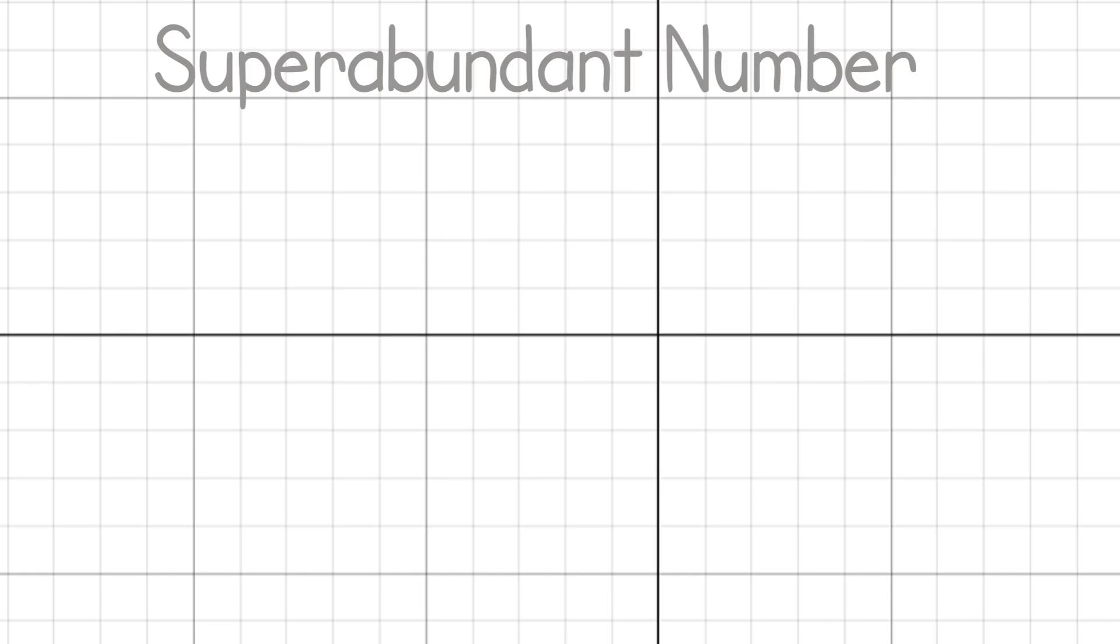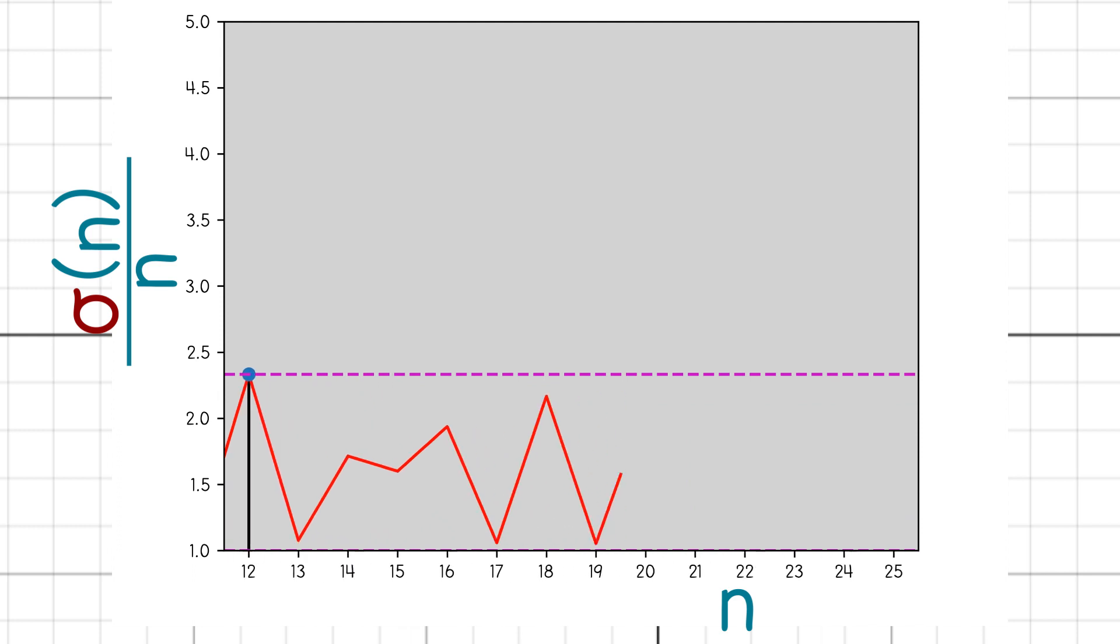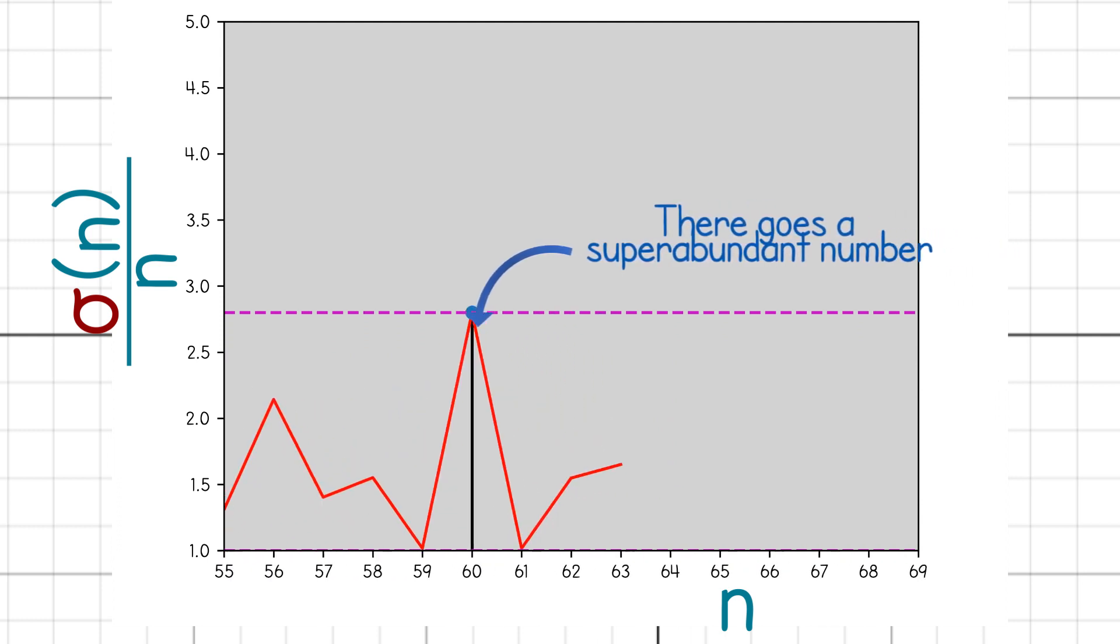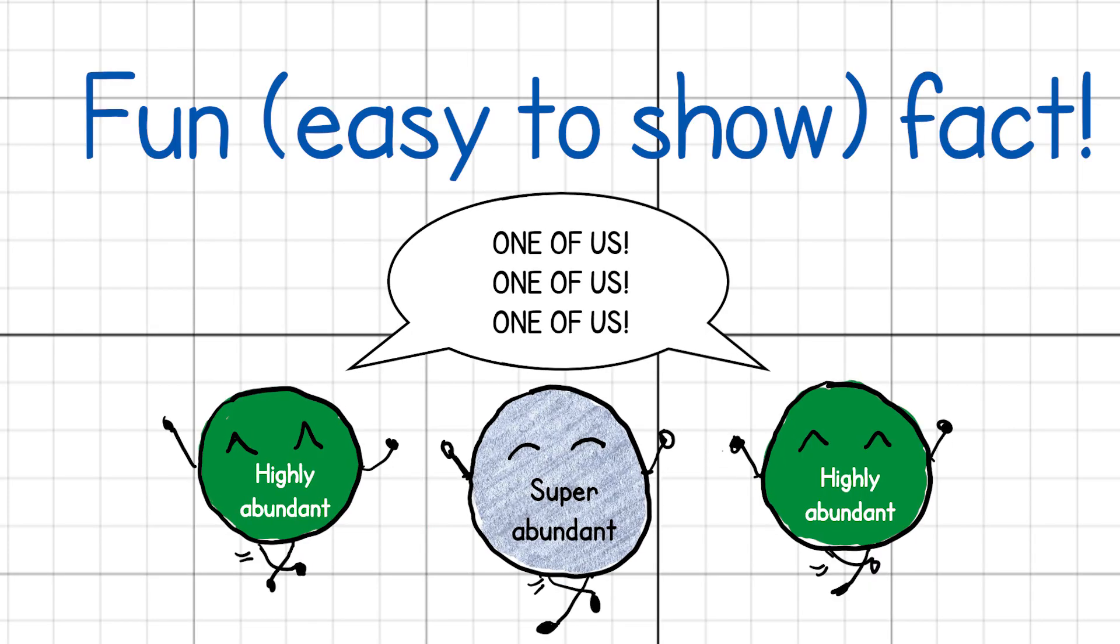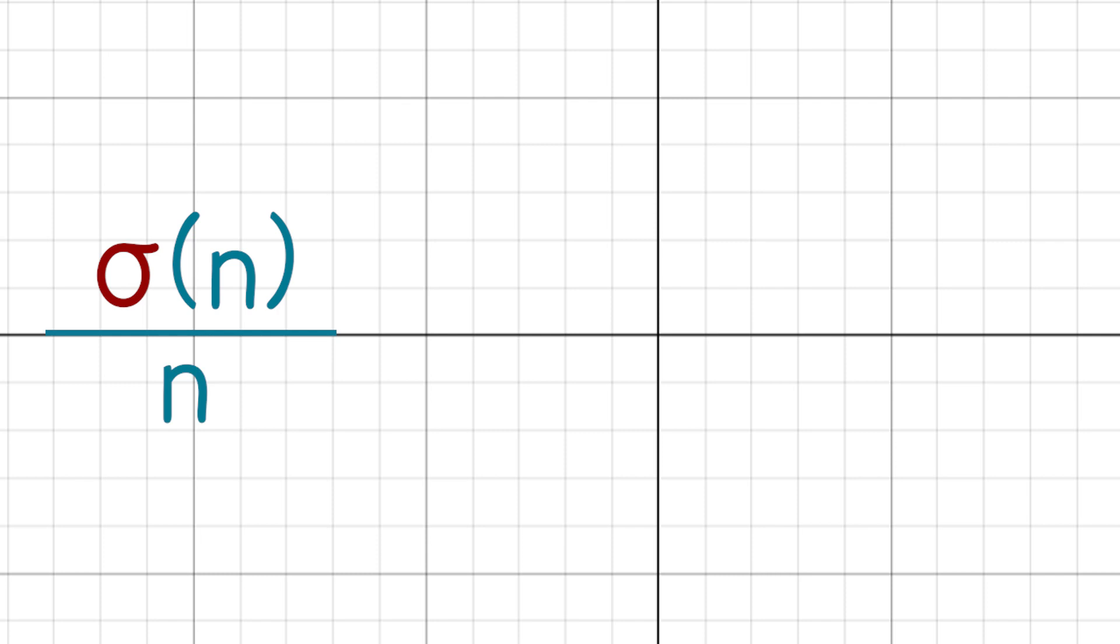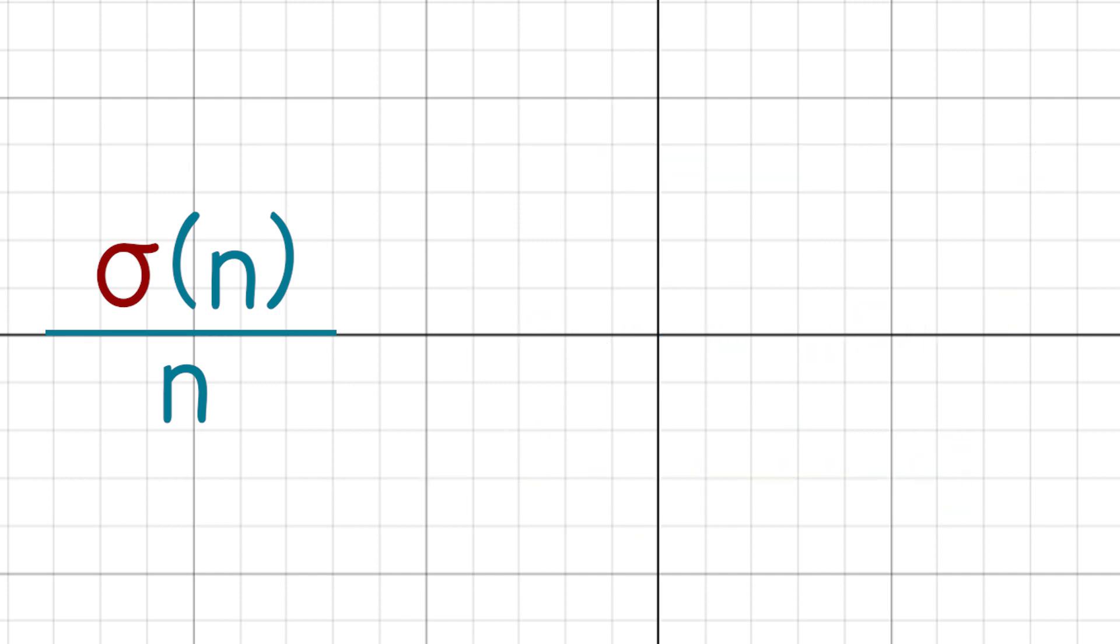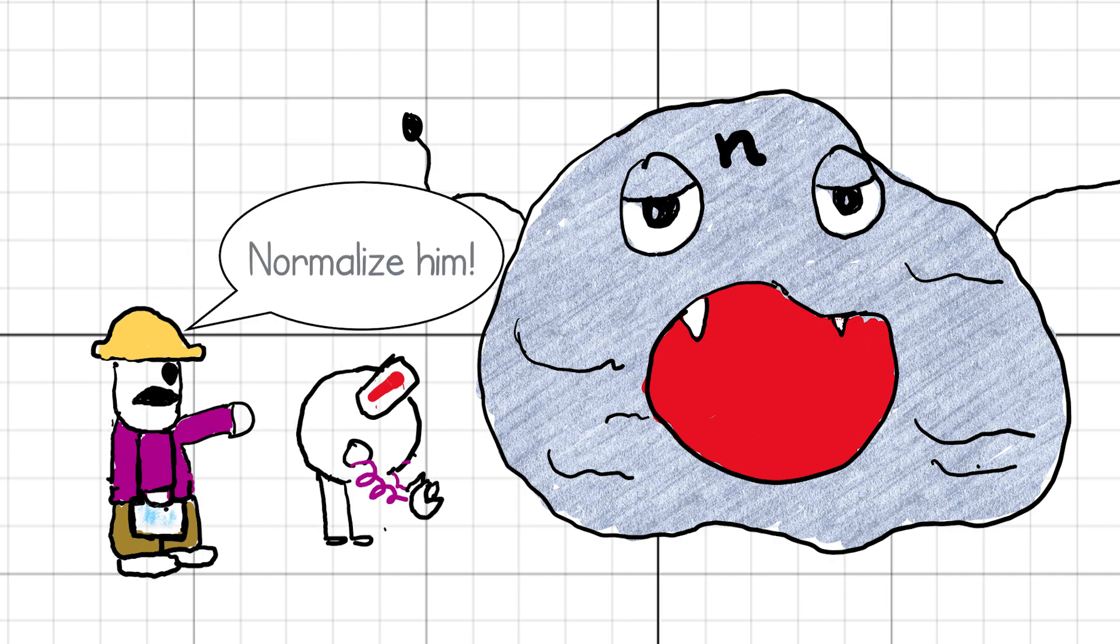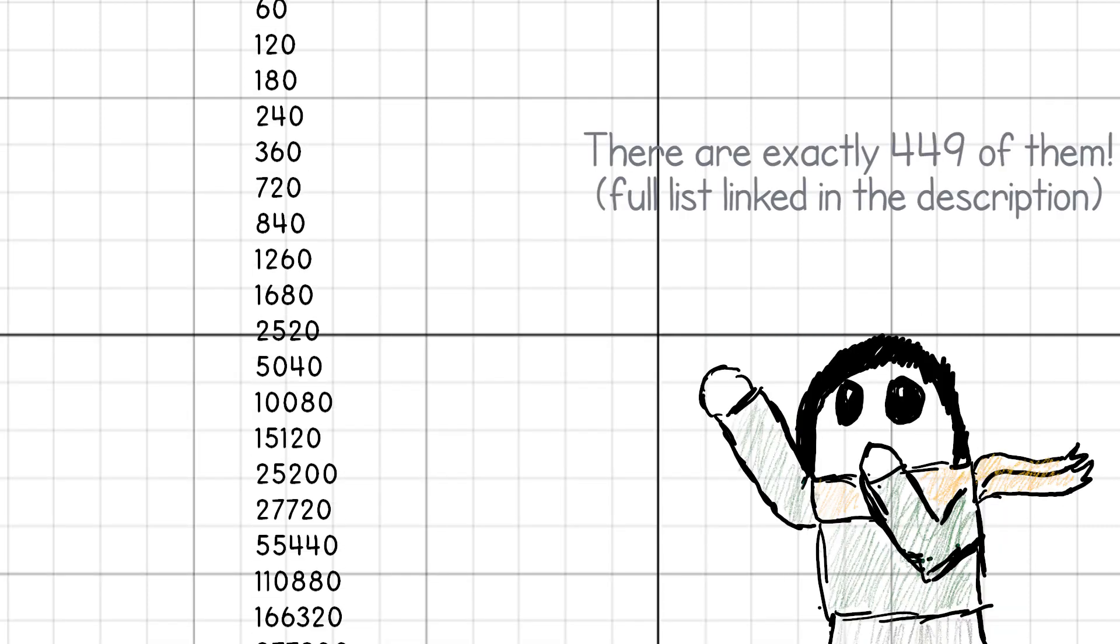Now, a super abundant number is a number for which sigma of n over n is larger than sigma of k over k for any k which is smaller than n. In this case, we plot n on the x-axis and sigma of n over n on the y-axis and see whenever the ceiling shifts. Fun fact, all super abundant numbers are also highly abundant. This quantity tells you if the number is abundant, deficient, or perfect. This quantity is intuitively a measure of how many divisors a number has, normalized by its size. As much as this diagram would like to convince you that these two notions of super abundance and highly compositeness are the same, let me tell you, they're not.